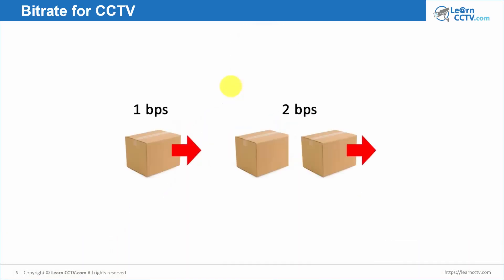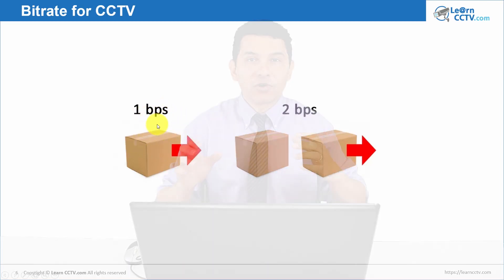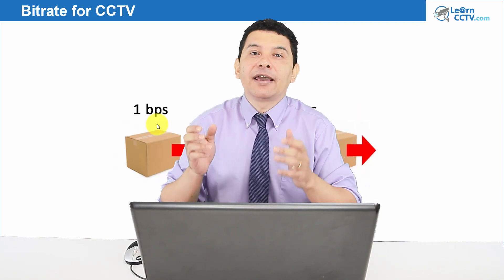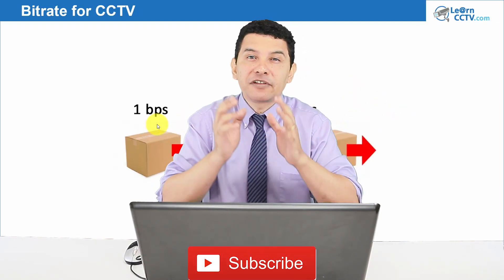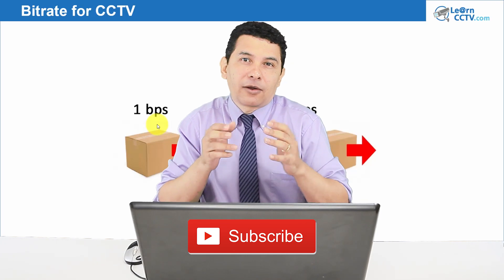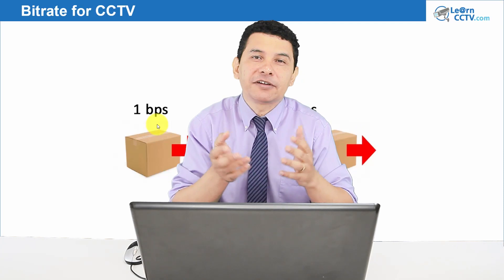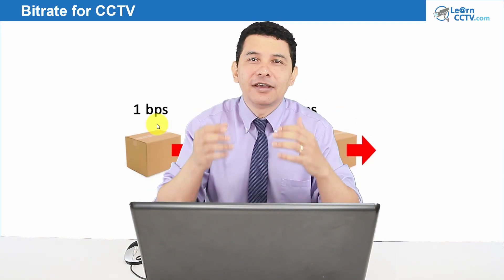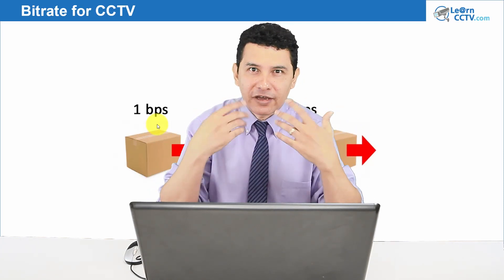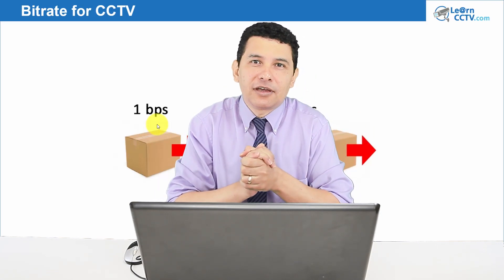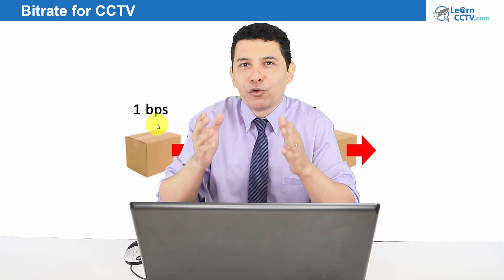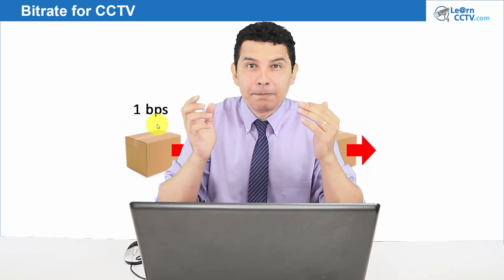Let's do an analogy with something you see every day. Say you have boxes and you're throwing one box per second to somebody — that's one bps. If you start throwing boxes more quickly — two boxes per second — you have two bps, then three bps, ten bps, and so on; the faster you move, the more bps you have. It's the same with your network, except you're moving zeros and ones — bits.